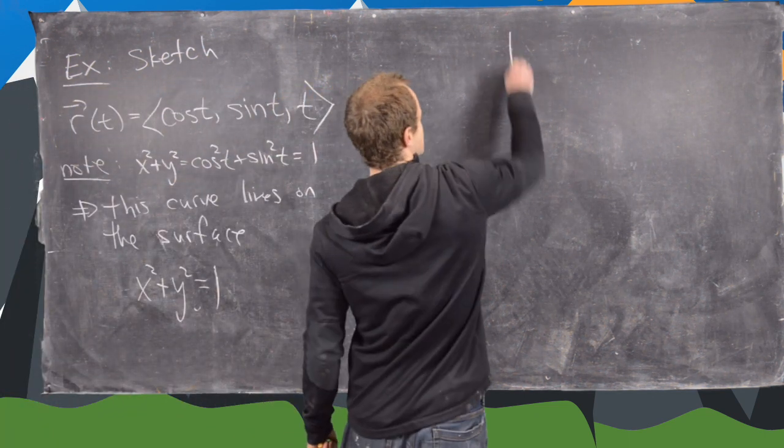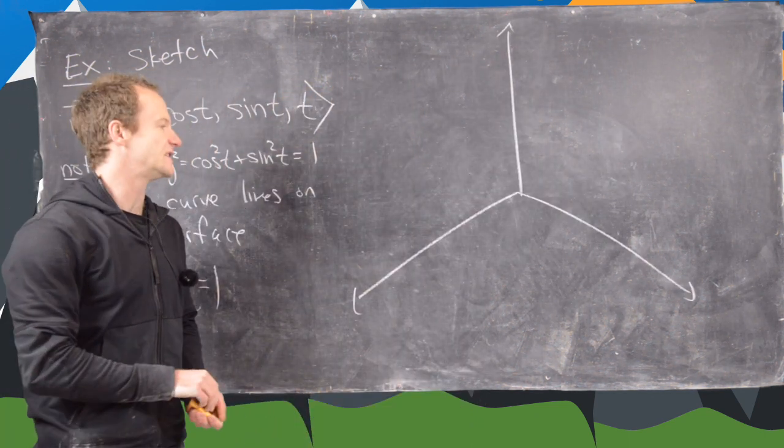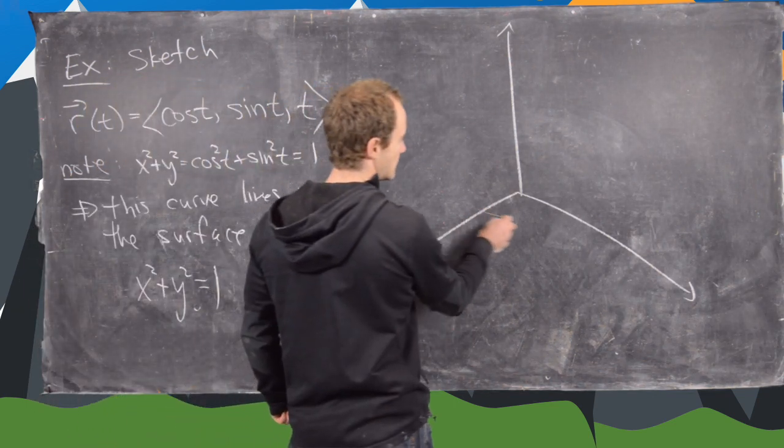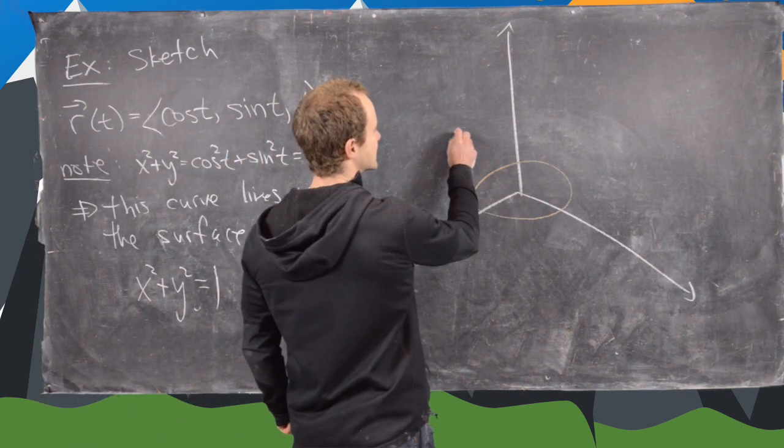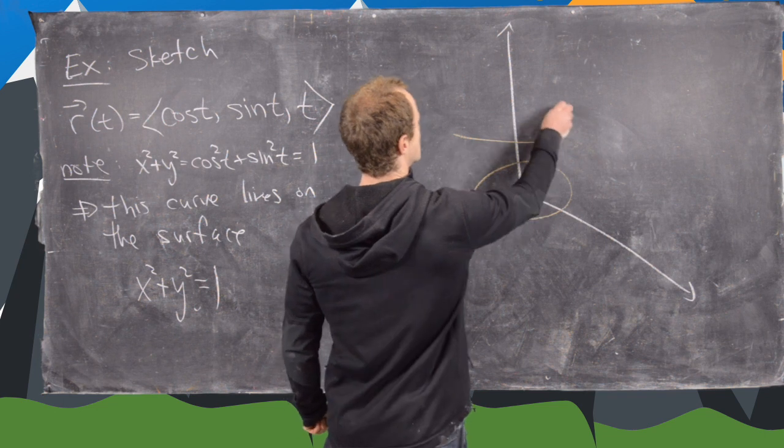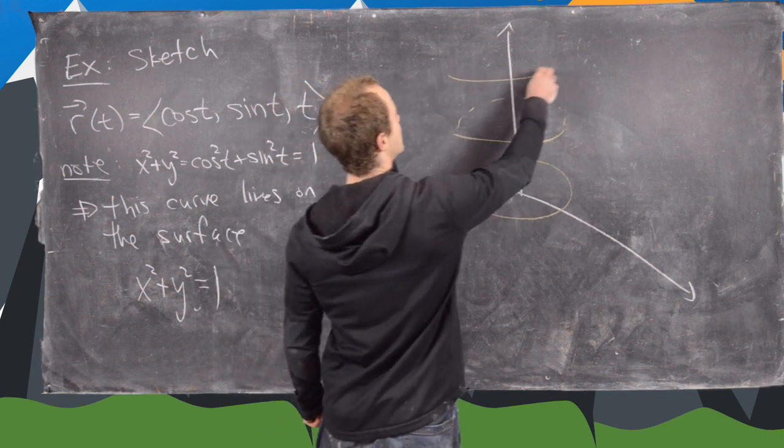So what that tells us, no matter what the z-value is, we're going to get a circle, which is going to give us a cylinder in the end.